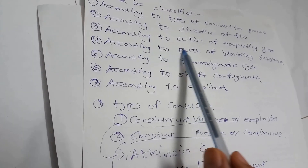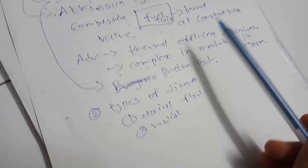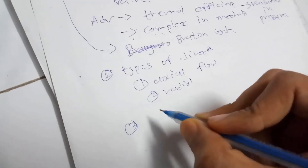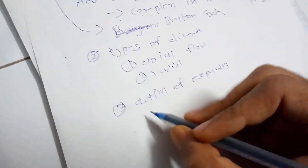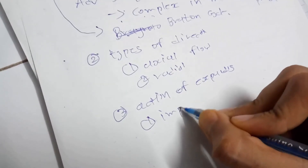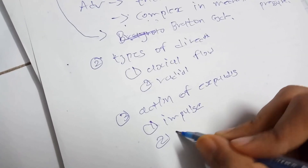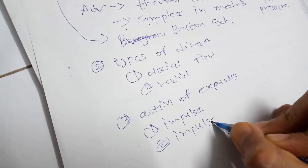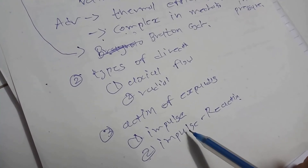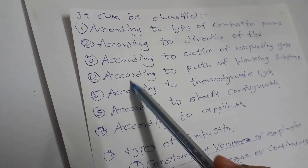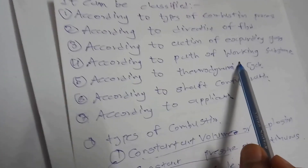The third classification is according to action of expanding gas. There are two types: the first is impulse type and the second is reaction type. This is fairly straightforward to understand. The fourth classification is according to the path of working substance, which is a really interesting subject.